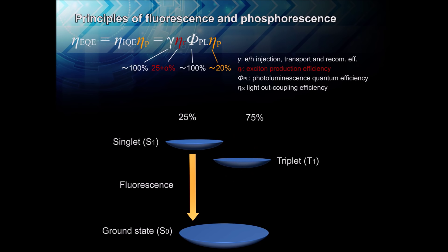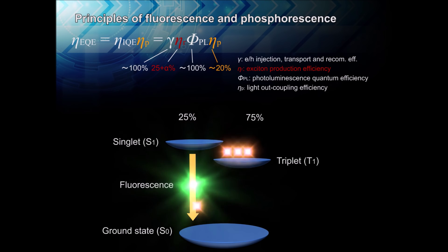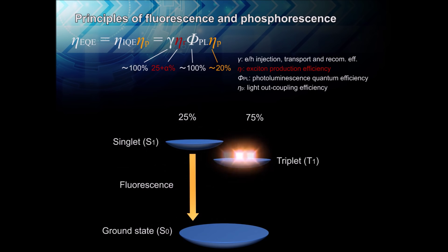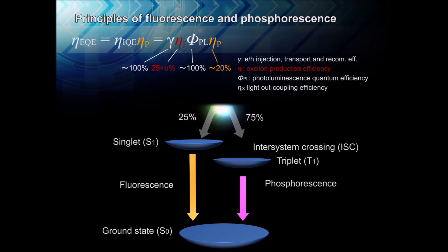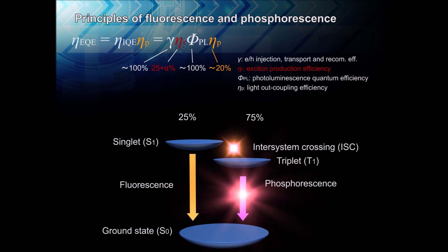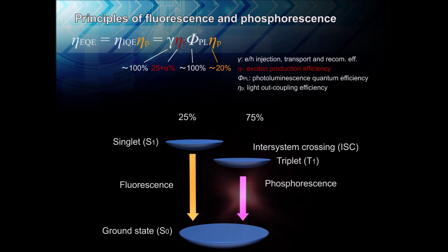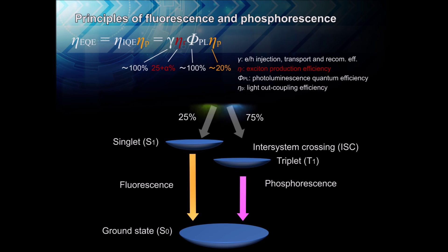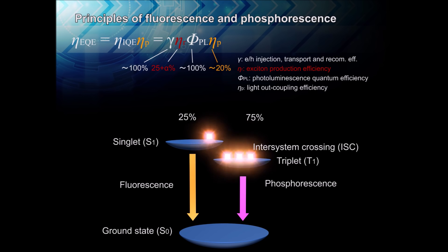The first OLEDs released only the energy in singlets as light through a process known as fluorescence. Thus, efficiency was low, because 75% of the excitons did not emit light. The next major step was the development of emitters that efficiently produce light from triplets, a process known as phosphorescence, by including a heavy metal in the molecule. By also converting singlets to triplets, phosphorescent materials can produce light from 100% of the excitons.